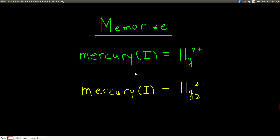There is one exception you must memorize: mercury. Mercury(II) is a mercury atom with a +2 charge — it lost two electrons. Mercury(I), however, is not Hg⁺ as you might think. Instead, it is always two mercury atoms bonded together — like a diatomic cation — written as Hg₂²⁺, where each mercury atom has a +1 charge giving an overall +2. You will never see Hg⁺; if it's mercury(I), it is always Hg₂²⁺. Just memorize that and put it on your card.